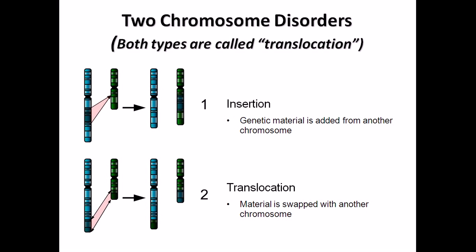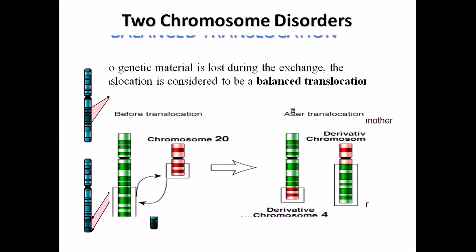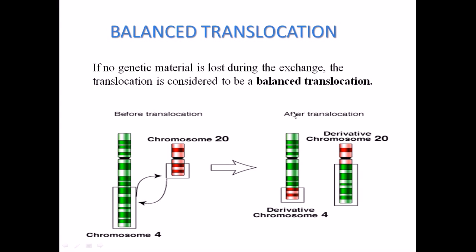For example, the sixth segment of the blue chromosome is swapped with the green chromosome's segment and vice versa. This changes the structure and gene alignment of both chromosomes, giving us different varieties of chromosomal defects. Translocation can actually be of two different types.